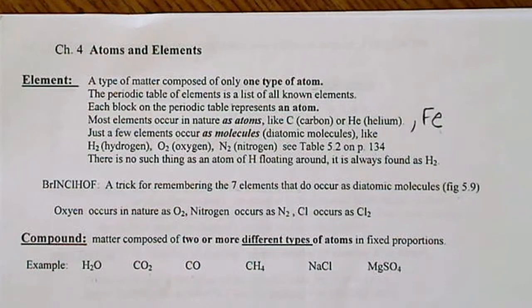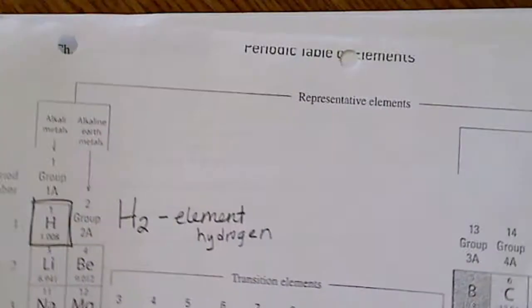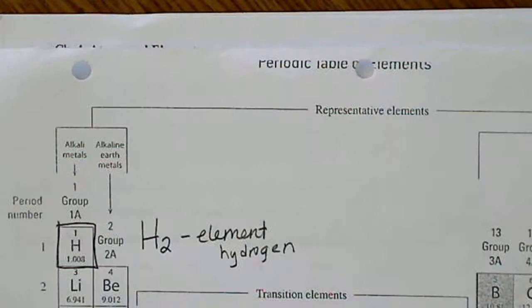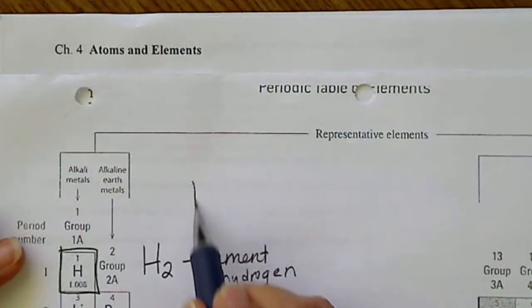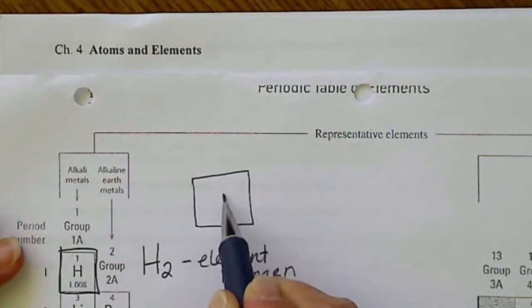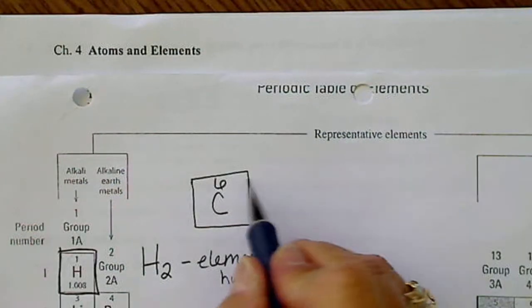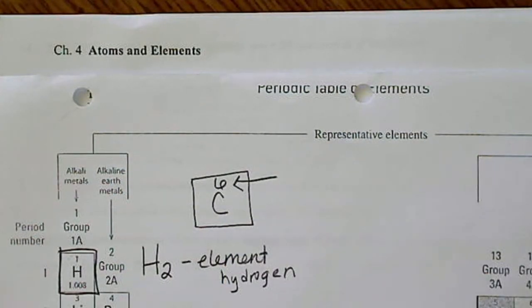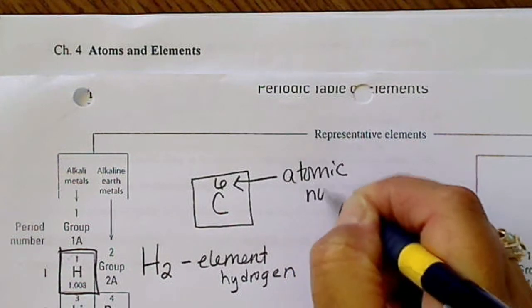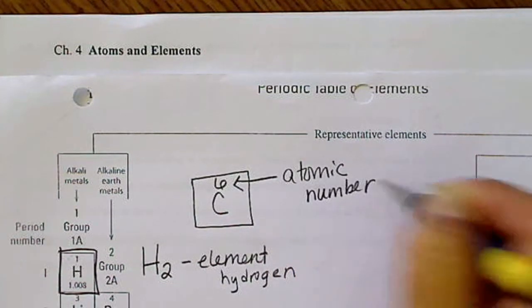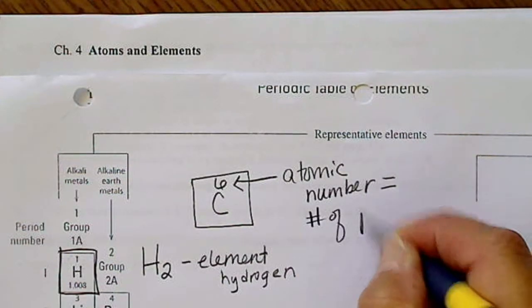Once we start looking at an atom in general, I'm going to be looking at the periodic table, and we're going to be looking at a couple of numbers here. So for example, carbon. We're going to see the six written above carbon. That is the atom's identity, or we call that the atomic number. And the atomic number is always equal to the number of protons.